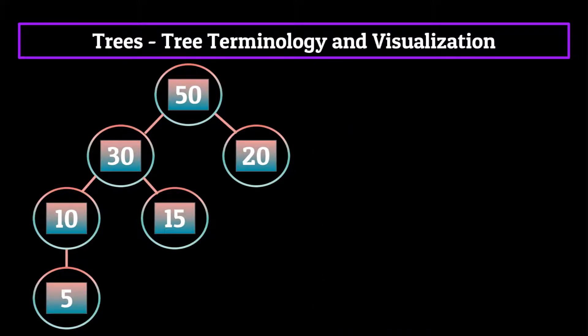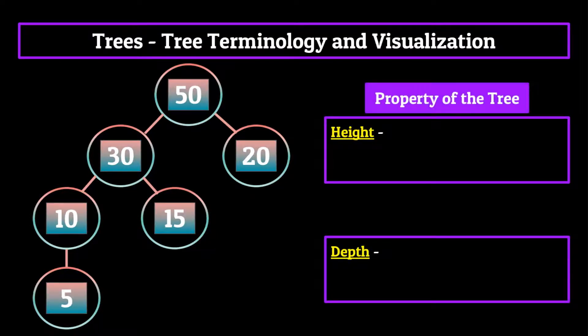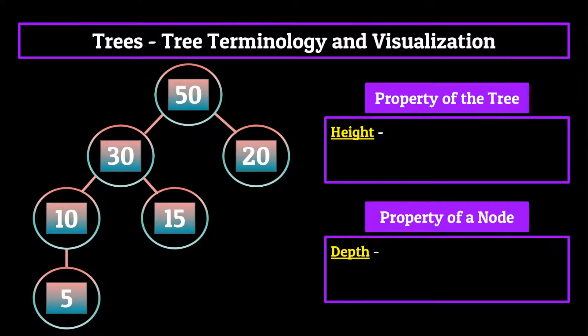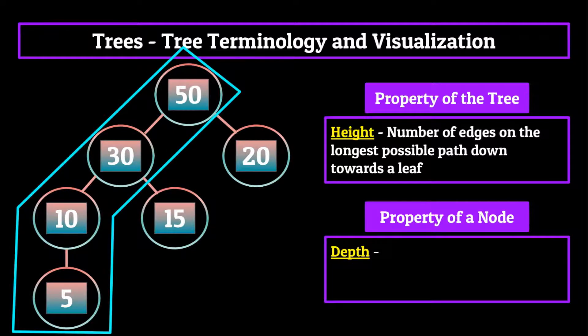Moving on, the next two pieces of terminology I want to go over with you guys are the height and depth of a tree. The height is a property of the tree itself, and the depth is a property of each individual node. Let's begin with the height. The height of a tree is the number of edges on the longest possible path down towards a leaf. So, in our example, since the longest path in our tree is from the 50 node to the 5 node, and there are three edges in that path, the height of the tree would be three.